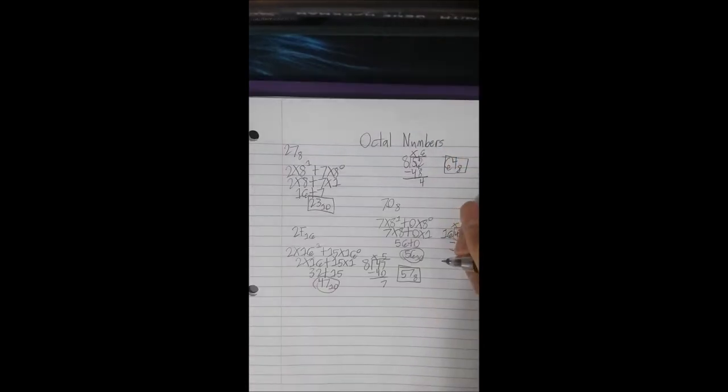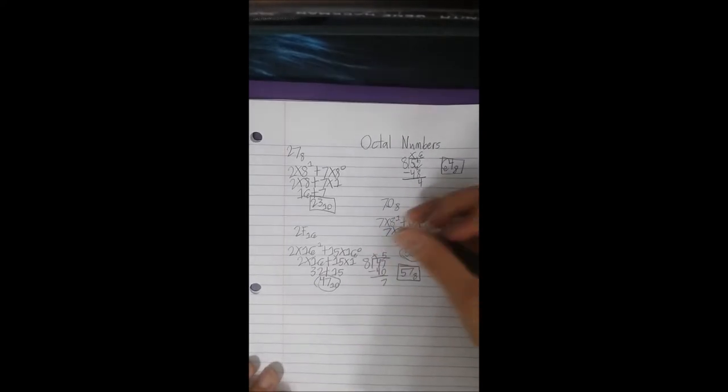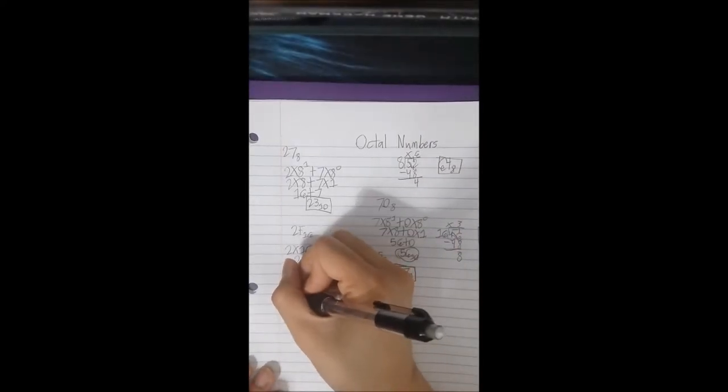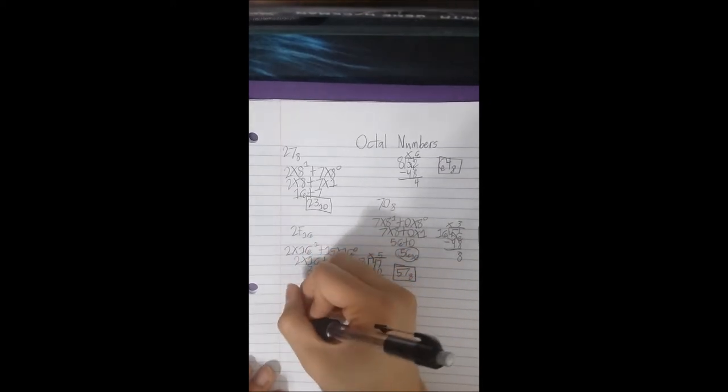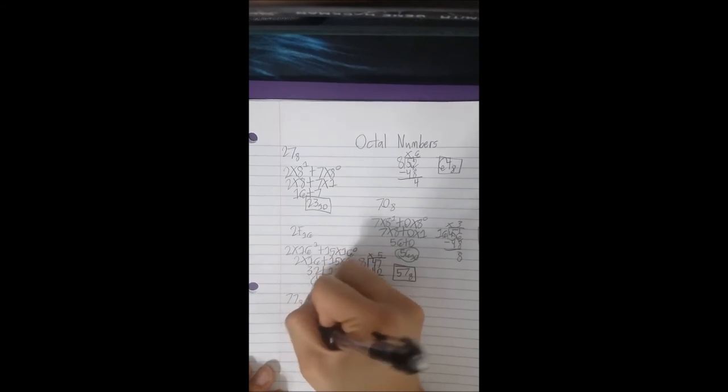Okay so next we're covering octal to binary. So what we do here, we can convert directly to binary. So let's give 77. How about that? So we're going to be using this kind of table: 4, 2, 1.